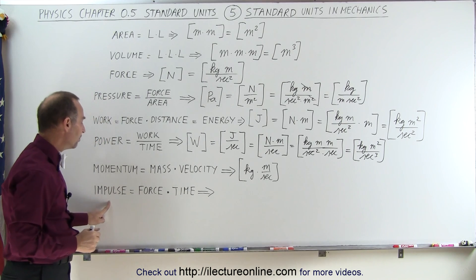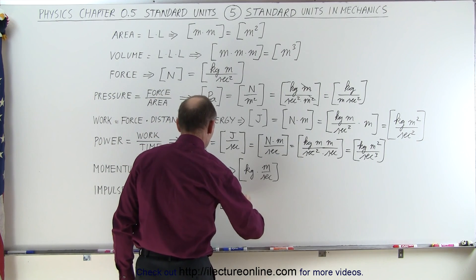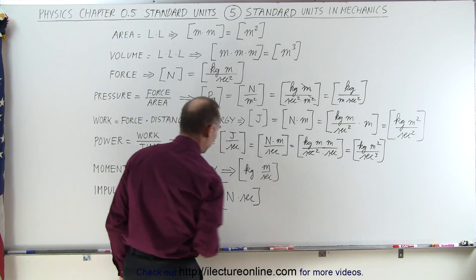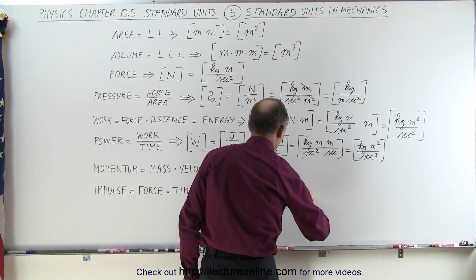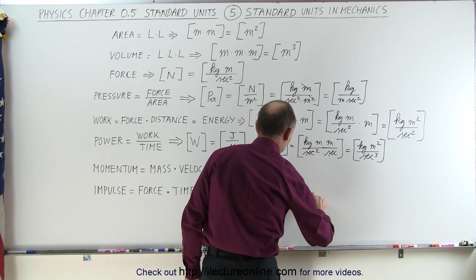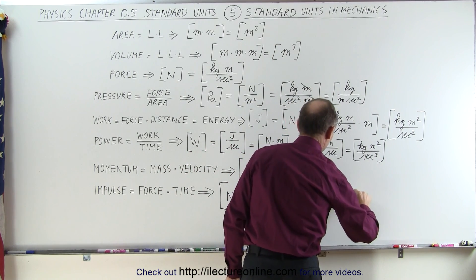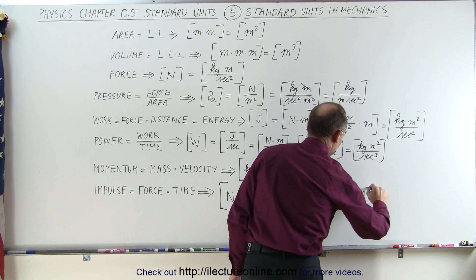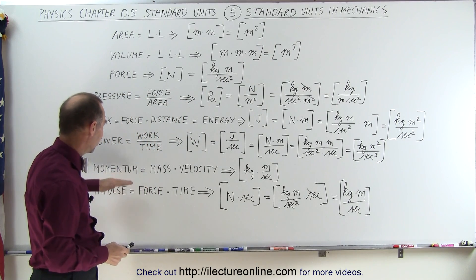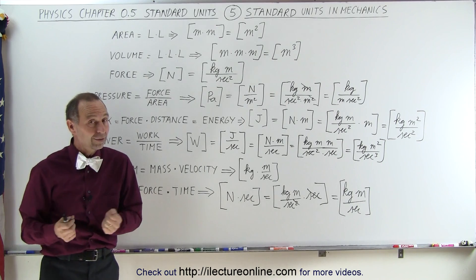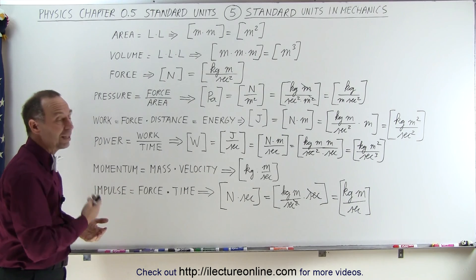Impulse is by definition force times time, which gives units of newtons times seconds. Since newtons equal kilograms times meters per second squared, multiplying by seconds cancels one second, leaving kilograms times meters per second. Those are the exact same units as momentum, which makes sense because impulse is defined as the change in momentum — so by necessity they must share the same units.